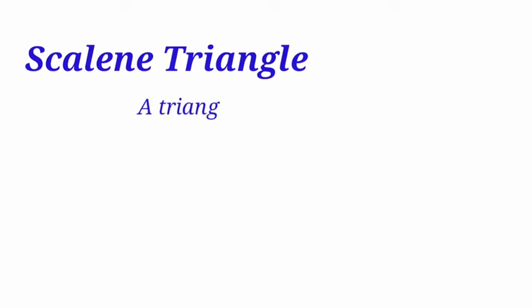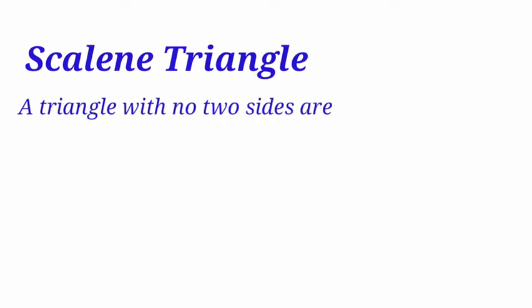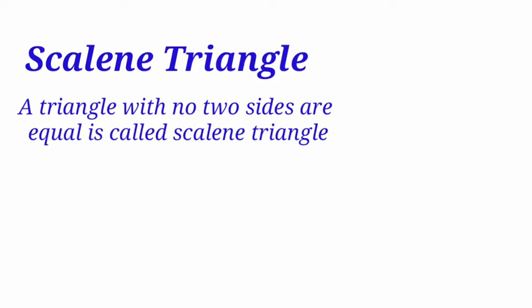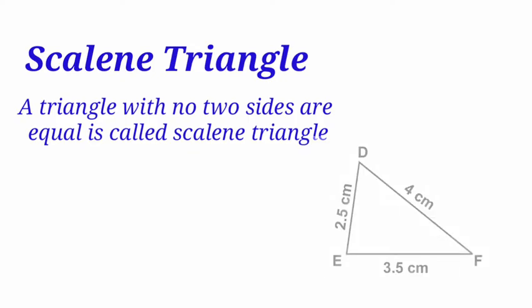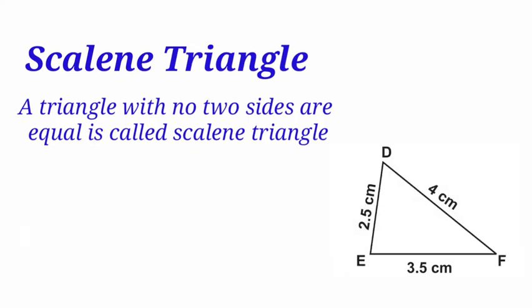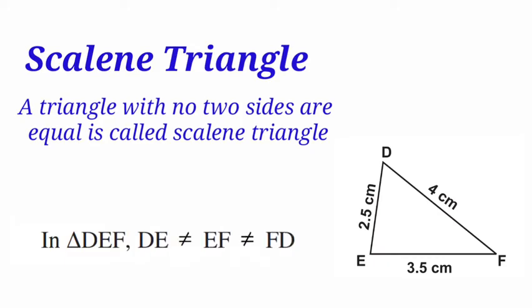Third type: scalene triangle. A triangle with no two sides equal is called a scalene triangle — that is, all sides are different. Observe triangle DEF — the three sides are not equal: DE is not equal to EF, which is not equal to FD.